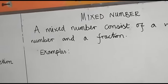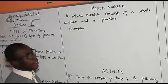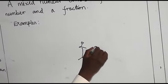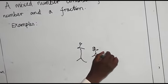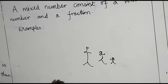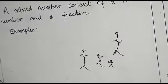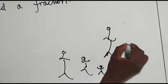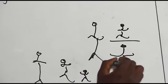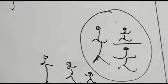In a real-time example, we can liken a mixed number to a nuclear family that consists of a father, a mother, and their child. The combination of the father — representing a whole number — and the mother carrying a child can together form a mixed number.